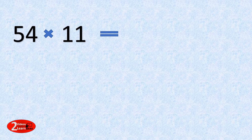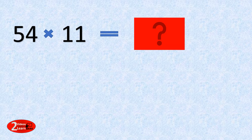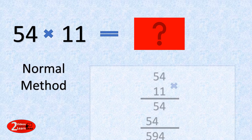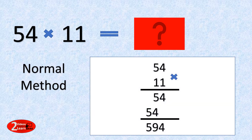In the normal method, first we have to multiply 54 by 1, getting the result as 54. Then again we have to multiply 54 by the other 1, getting the result as 54. Then we have to sum the results that we have obtained — 54 plus 540 — and the answer would be 594.